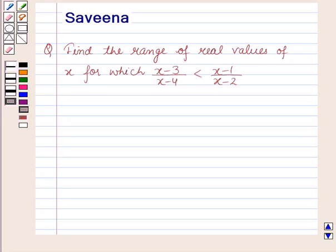Hello and welcome to the session. In this session we will discuss a question which says: find the range of real values of x for which (x minus 3) over (x minus 4) is less than (x minus 1) over (x minus 2).